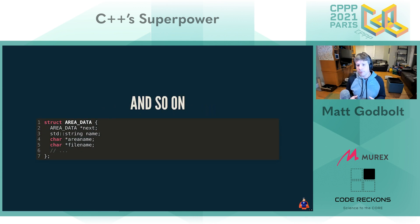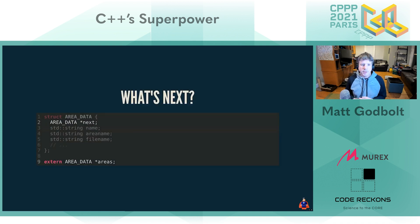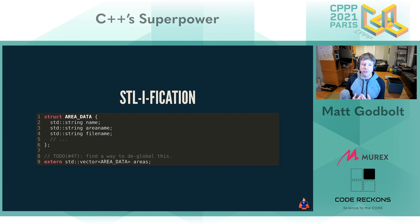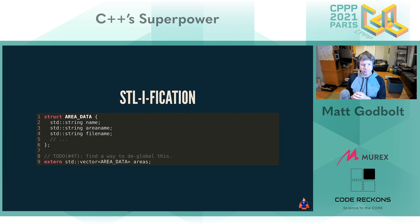Now we build and run — no more leaks, everything is great. We can go back to the original area data and do the same trick for the other `char*` fields, making them `std::string` as well. We know what to look out for: some places where we'll need to add `.c_str()`, and there's almost certainly the same `strdup` pattern in the loading functionality. What's next? The `next` pointer. I'd like to get rid of that hand-rolled linked list. The easiest thing is to get rid of the `next` pointer and make a vector of areas.